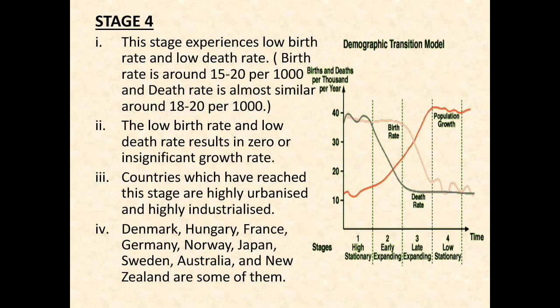Next we have Stage 4. In this stage there is low birth rate and low death rate. Birth rate is around 15 to 20 per thousand and death rate is almost similar, around 15 to 20 per thousand. Population growth is low and stationary, as we can see. The low birth rate and low death rate results in zero or insignificant growth rate.